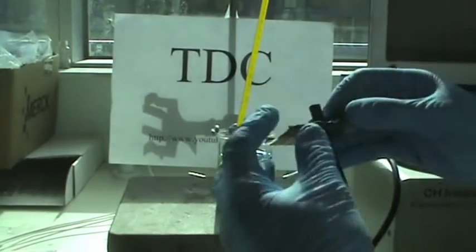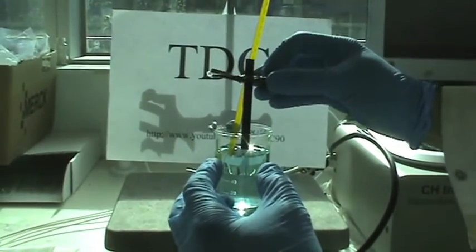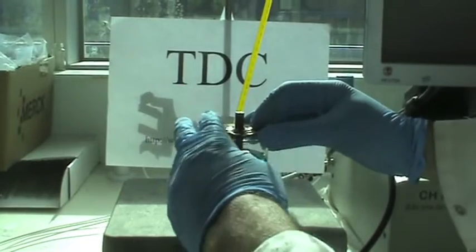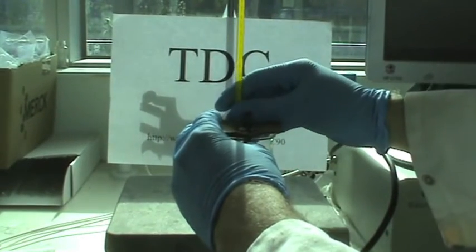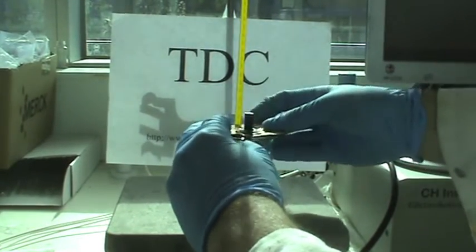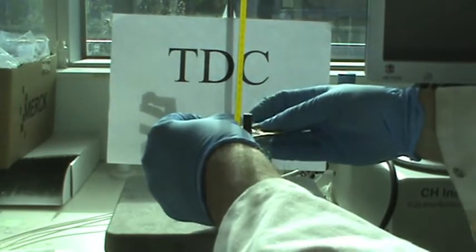After the addition of the plating solution, place the cell onto the heating mantle and heat until temperature registers between 40 to 60 degrees on the thermometer. Attach the pre-cleaned graphite working electrode onto the lower middle side of the cell.